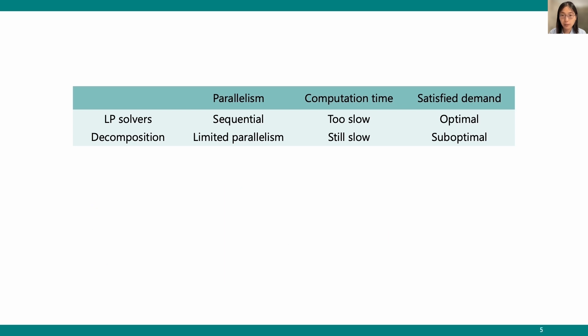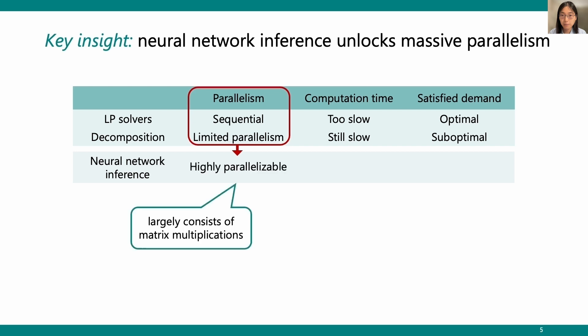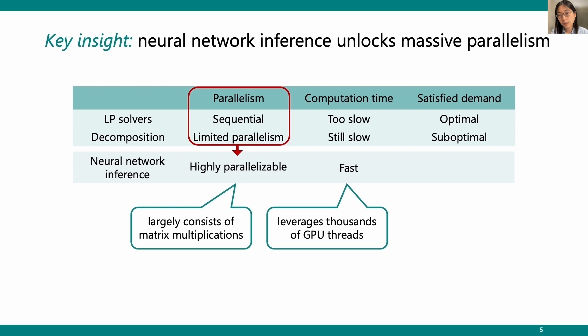The root cause of the scalability problem is the sequential nature and limited parallelism. Our key insight is that neural network inference unlocks massive parallelism, because it largely consists of parallelizable matrix multiplication. By leveraging thousands of GPU threads, neural network inference can be quite fast.